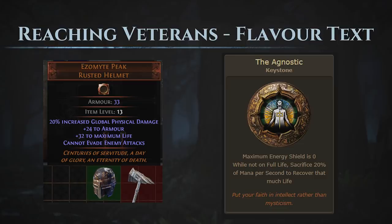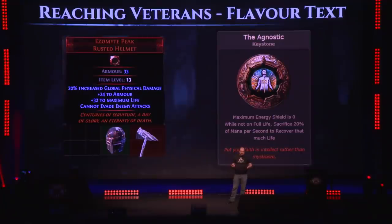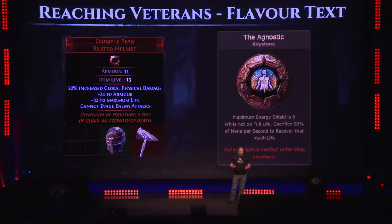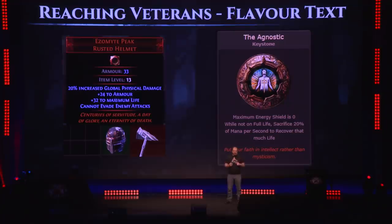Another way we try to speak to veterans is flavor text. Veterans see uncommon items, uniques that newbies never run across. I love uniques that have flavor text that might not mean much initially, like Ezomyte Peak. The flavor text — 'centuries of servitude, a day of glory, an eternity of death' — might not mean much at first. But in 4.0 we actually get to meet the Ezomytes and understand from their history what that flavor text means to them. If a veteran has seen this flavor text, they'll start to piece things together, and that's the feeling we're looking for.